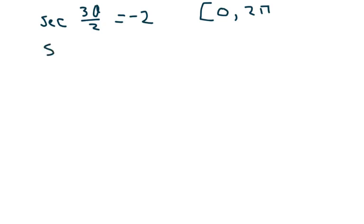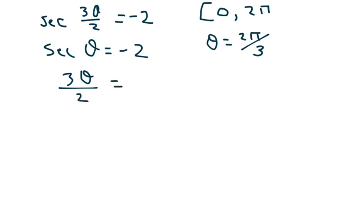And so we just seek where secant of theta equals negative 2. And this one is going to be 2 pi over 3. So theta equals 2 pi over 3. Now we set our argument, 3 theta over 2 to 2 pi over 3 plus 2 k pi. Because the period for secant is 2 pi.